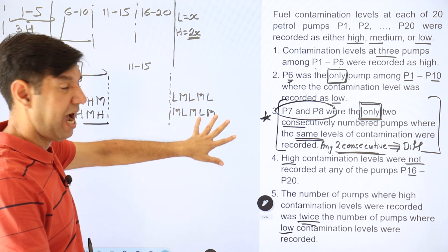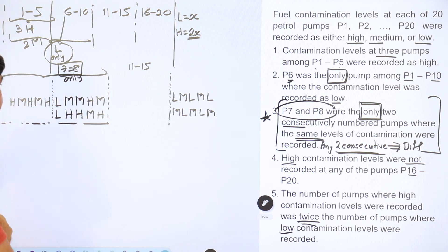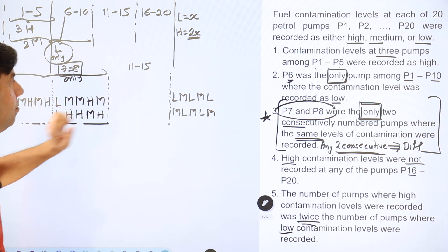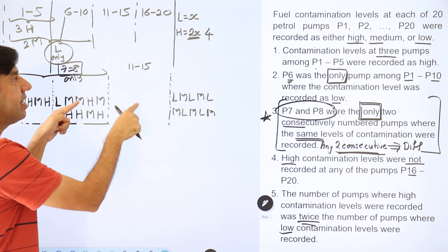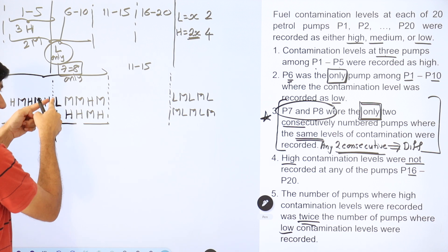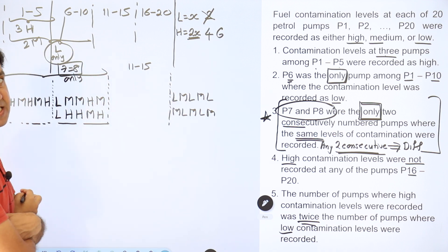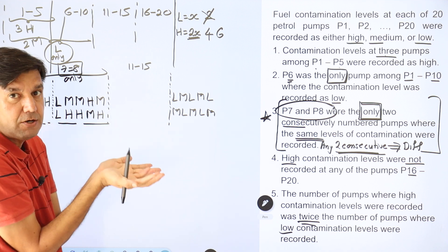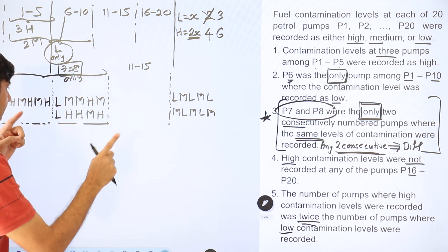How many highs do I already have? In pumps 1 to 5: 3 H's. In pumps 6 to 10, either 1 or 3 additional H's. So minimum 4 H's. If H = 4, then L = 2. But I can already see at least 1 low (P6) and minimum 2 lows elsewhere — so H = 4 is not possible. Let's try H = 6, which means L = 3.